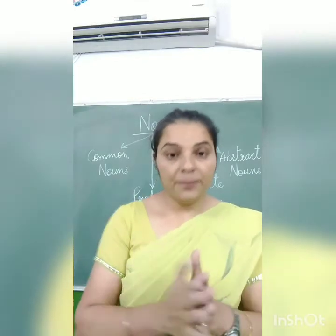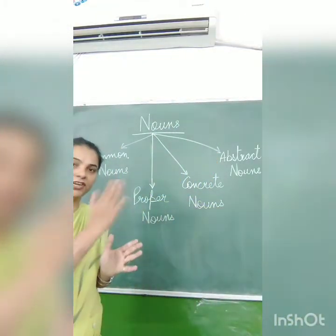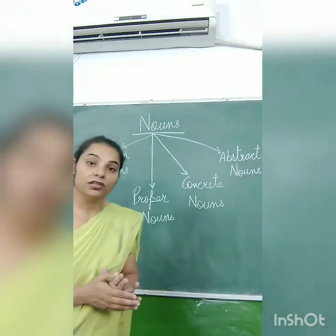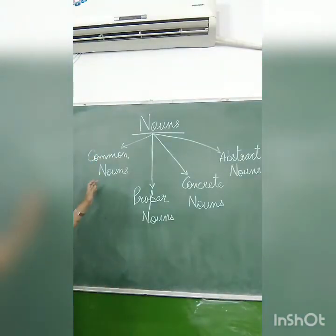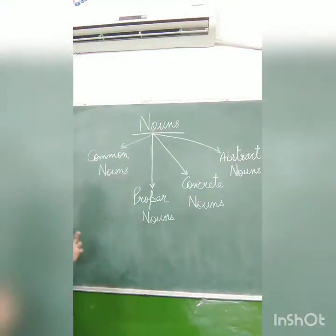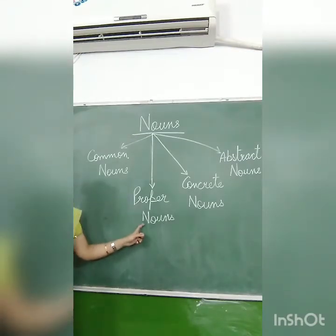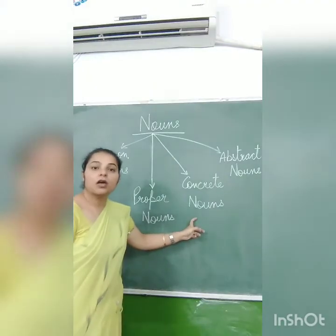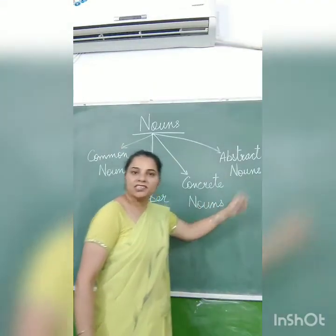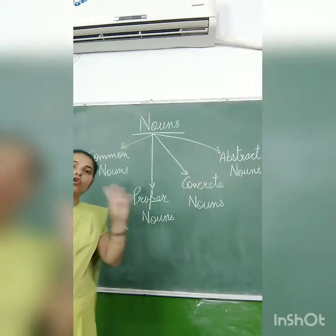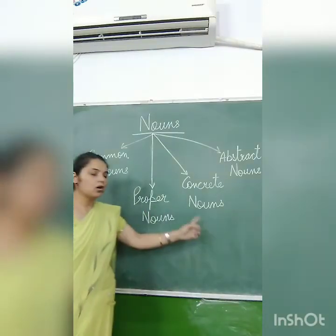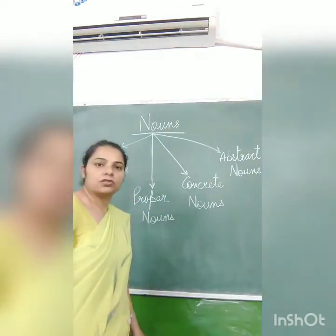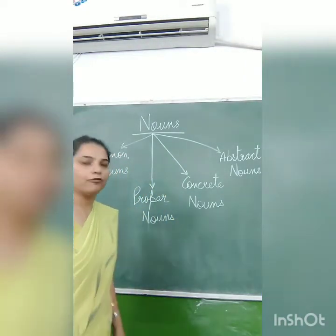Now further, these nouns are divided into parts — they have a classification. Nouns have some categories. You can see that four types of nouns are written here: the first one is common nouns, the second is proper nouns, the third is concrete nouns, and the fourth is abstract nouns. So these are four types of nouns.